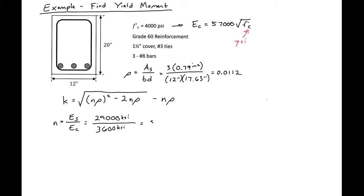This will give us a modular ratio of 8.1. So then we can plug these values in for k. We'll get square root of 8.1 times 0.0112 squared minus 2 times 8.1 times 0.0112, and then all of this minus 8.1 times 0.0112. And we'll get our k to equal 0.3426. So this is the value that we can use for our k.